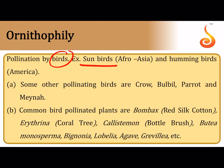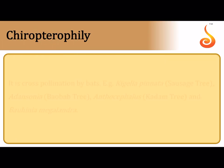Ornithophily is pollination by birds — mainly sunbirds and hummingbirds. Common bird-pollinated plants include Bombax, Erythrina (coral tree), Callistemon (bottle brush), Butea monosperma (flame of the forest), Bignonia, Lobelia, Agave, and Grevillea robusta (silver fir).